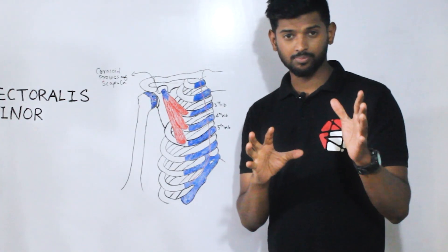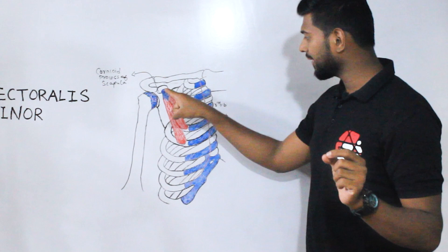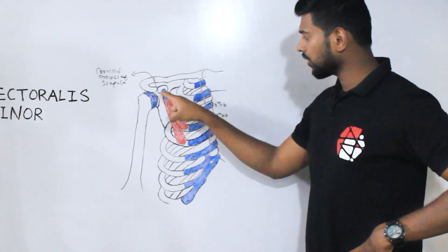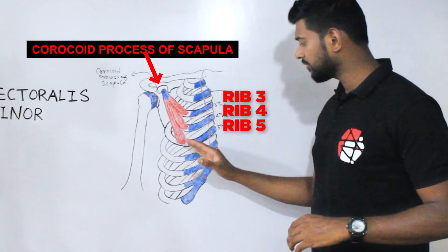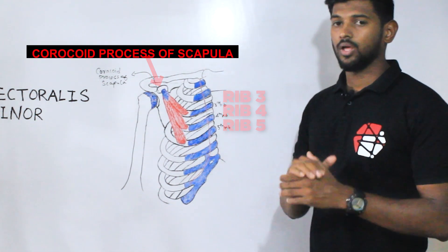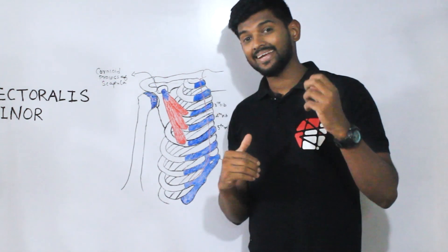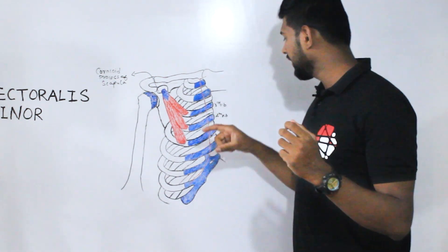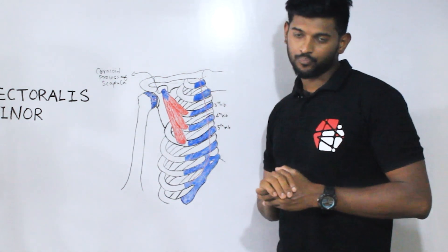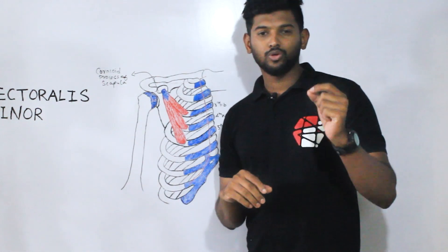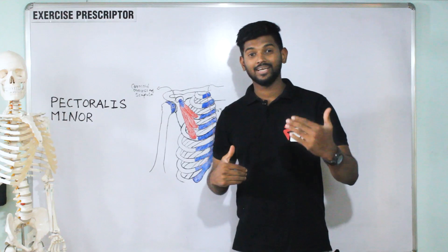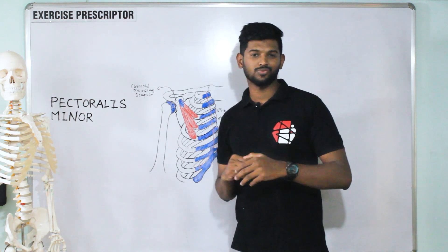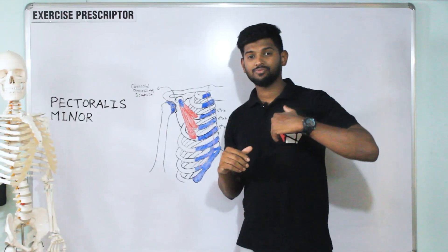The attachment of this muscle: it attaches over the medial aspect of the coracoid process of the scapula, and to ribs three, four, and five. Sometimes this muscle rarely also attaches to the second rib. If you know the origin and insertion of this muscle, comment your answers below — I'll explain the origin and insertion later in this video.